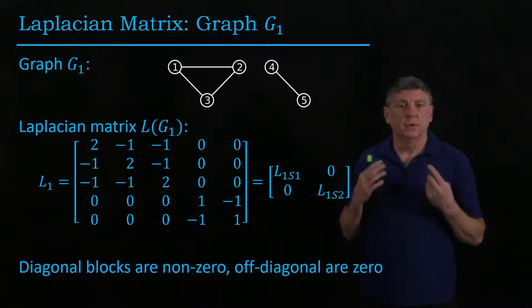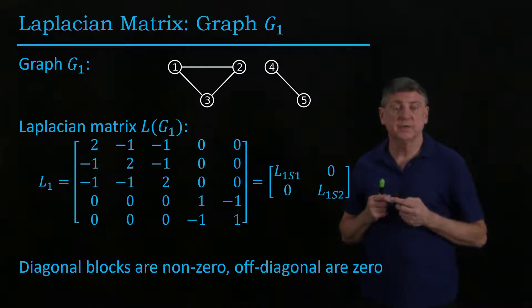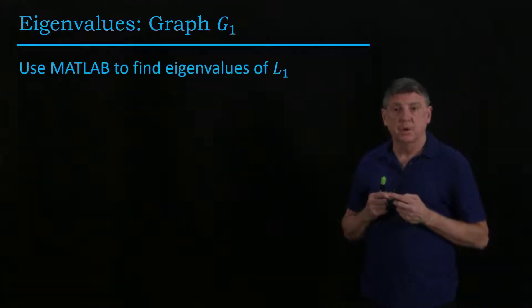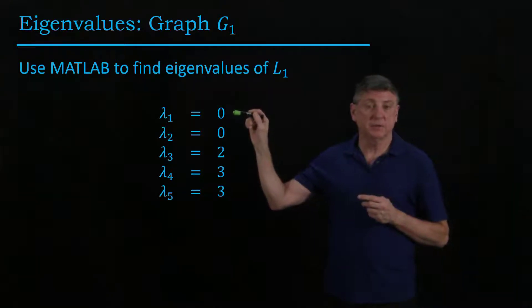Now what are some of the eigenvalues and eigenvectors that are associated with this matrix? Well we can use MATLAB to find these and we already know that one of the eigenvalues is zero because that's associated with the ones vector.